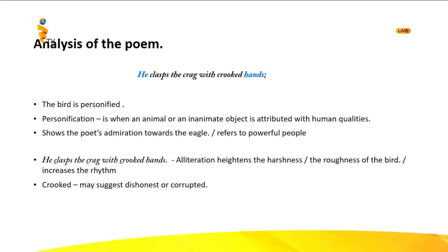Now let's go a little bit deeper. Tennyson refers to the bird as 'he' — do we usually refer to birds as 'he'? We use 'it' to refer to birds or animals. This particular bird also has hands — crooked hands. But birds don't have hands; they have talons or claws. The poet has attributed or imbued the bird with human-like qualities. He has personified the bird. What is the technique used here? We call it personification — when an animal or inanimate object is attributed with human qualities.